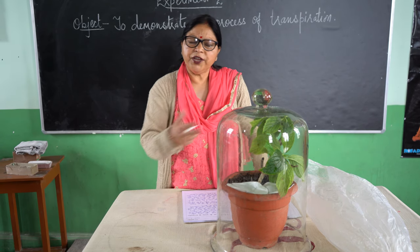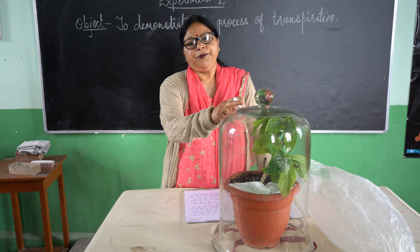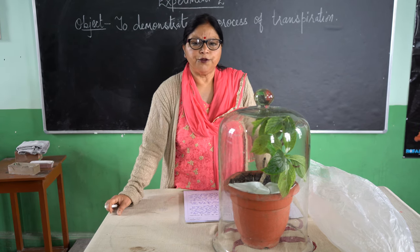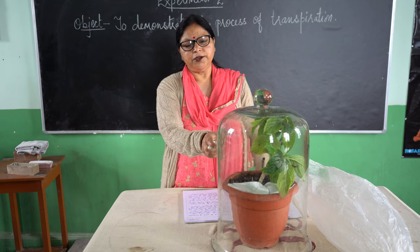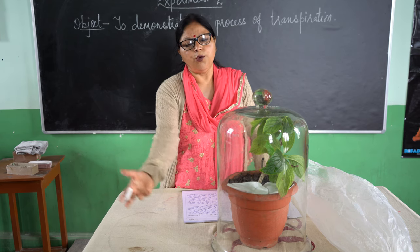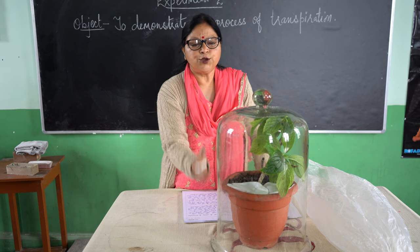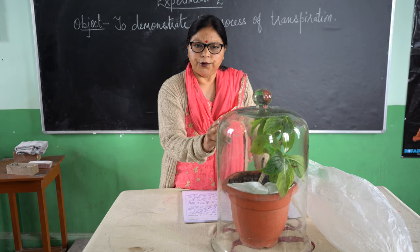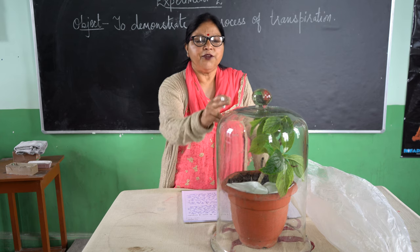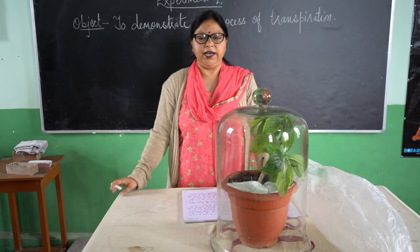From where have these water drops come? Water was actually lost from the aerial parts — that means from the leaves of the potted plant. Since these water vapors could not escape due to the barrier of the bell jar, they condensed and formed water drops visible on the inside.